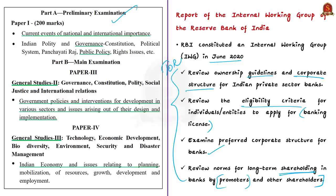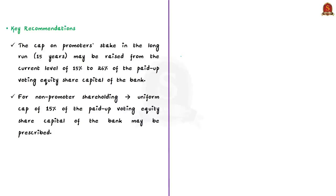Let us see some of the key recommendations put forward by the IWG. The first recommendation is to raise the cap on promoters' stake in banks in the long run — that is, in 15 years, the shareholding of promoters should be increased to 26% from the current level of 15% of the paid-up voting equity share capital of the bank. Paid-up capital is the amount of money a company has been paid from shareholders in exchange for shares of the stock. The IWG has recommended increasing the shareholding of promoters.